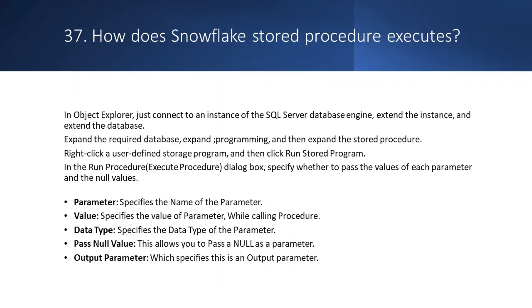Question: How does a Snowflake stored procedure execute? Answer: In Object Explorer, connect to an instance of the SQL Server Database Engine, expand the database, expand the required database and Programming, then expand Stored Procedures. Right-click a user-defined stored program and click Run Stored Program. In the Run Procedure dialog box, specify whether to pass values for each parameter including null values, the name of the parameter, the value, the data type of the parameter, and whether it is an output parameter.